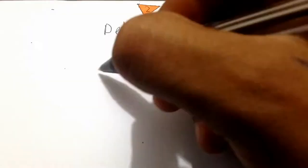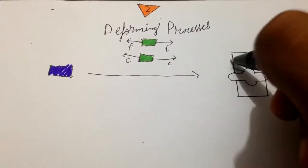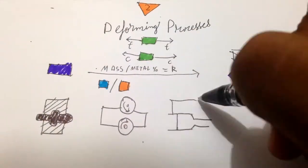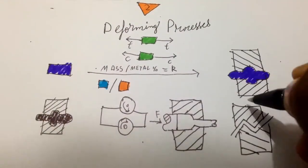Second comes deforming processes which makes use of stresses like tension, compression, etc. to deform a material in cold or hot condition without changing its mass or metal composition. Some of them are forging, rolling, sheet metal working, and extrusion.